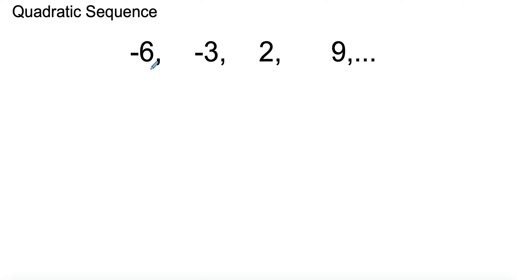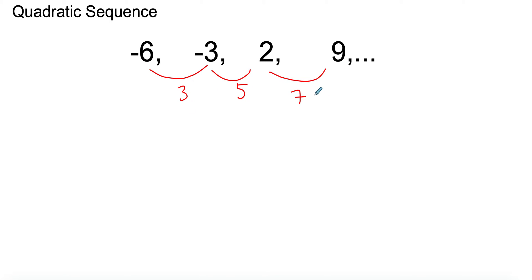The first thing you're going to do is find the common difference — be careful of the signs. So in this case I'm doing negative 3 minus negative 6, which is 3, then 2 minus negative 3 gives 5, and 9 minus 2 is 7. If it was an arithmetic sequence this would be a constant common difference, but it's not, so we take another difference and notice it's 2.